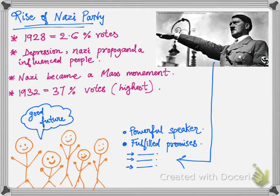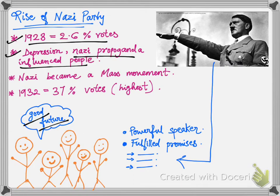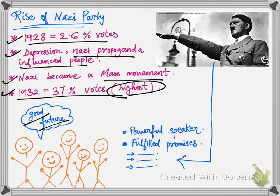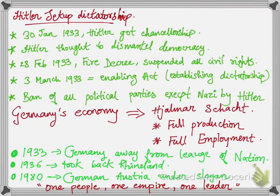In 1928, the Nazi Party got only 2.6% of votes. But during the Great Economic Depression, Nazi propaganda and Nazi solutions influenced people, and they thought they would have a good future under Nazi society. The Nazi movement became a mass movement, and in 1932, the Nazis got 37% of the votes in parliament — the highest that year. Hitler was a very powerful speaker. He promised to make Germany a strong nation again, take revenge for the Treaty of Versailles, and give employment to the unemployed — and he later fulfilled these promises.